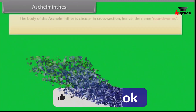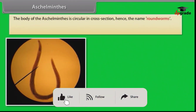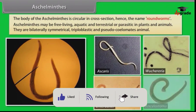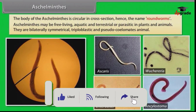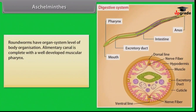Ascelminthes: The body of ascelminthes is circular in cross-section, hence the name roundworms. Ascelminthes may be free-living, aquatic and terrestrial, or parasitic in plants and animals. Ascelminthes are bilaterally symmetrical, triploblastic and pseudocoelomate animals. Roundworms have organ system level of body organization.